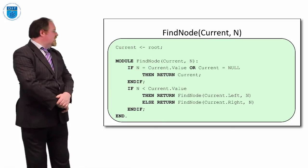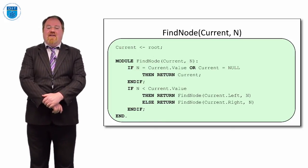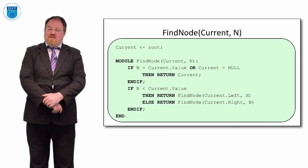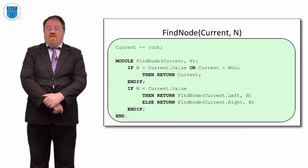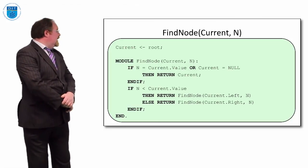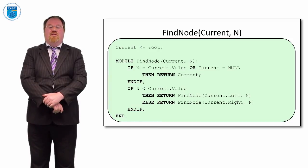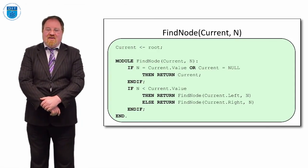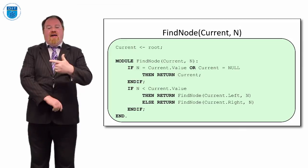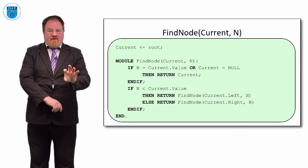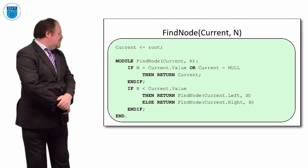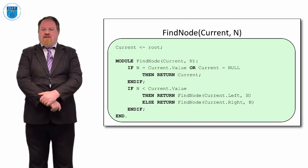The recursive find_node module takes the current root and the value n. If the current node is null or equals n, we return. Otherwise, if n is less than the current value we go left, else we go right, calling find_node recursively with either the left or right subtree. This is a much simpler and more understandable program than the iterative version.